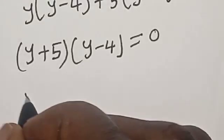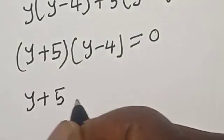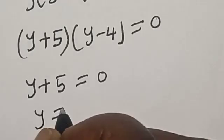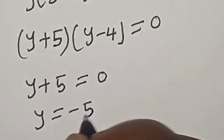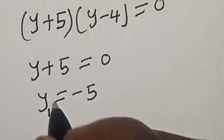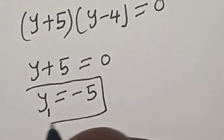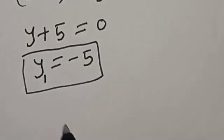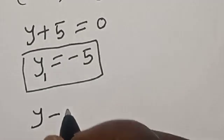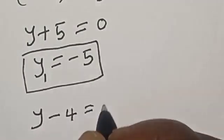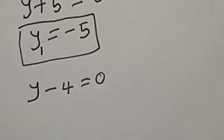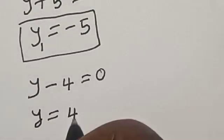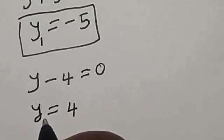Now, y plus 5 is equal to 0, then y is equal to minus 5 — call this y1. Also from the other factor, y minus 4 is equal to 0, so y is equal to 4 — this is y2.